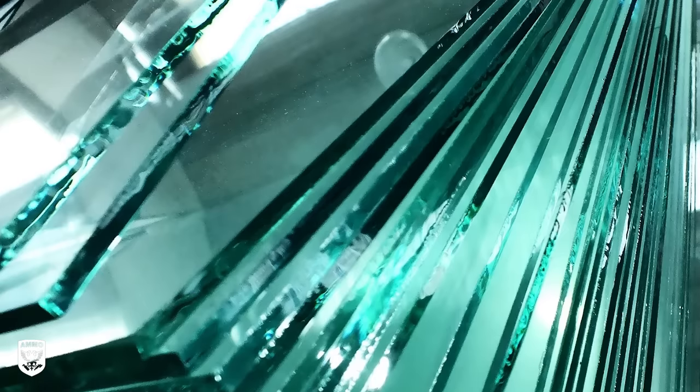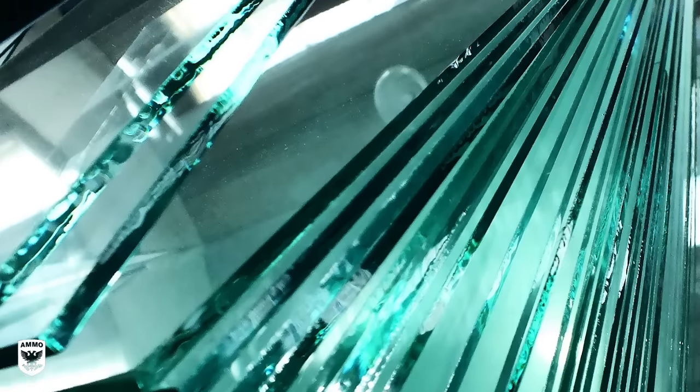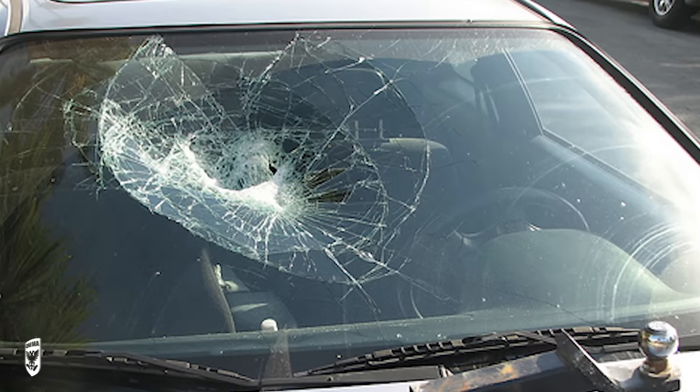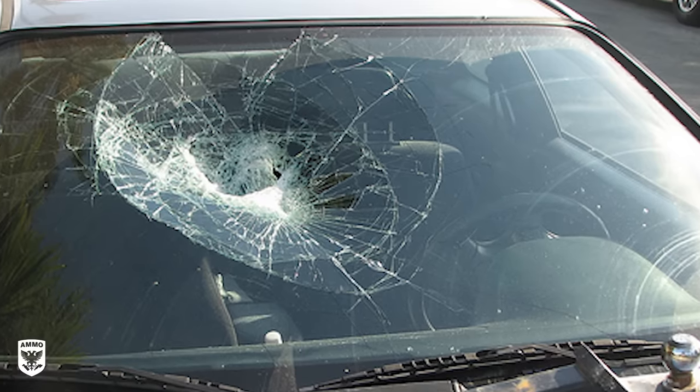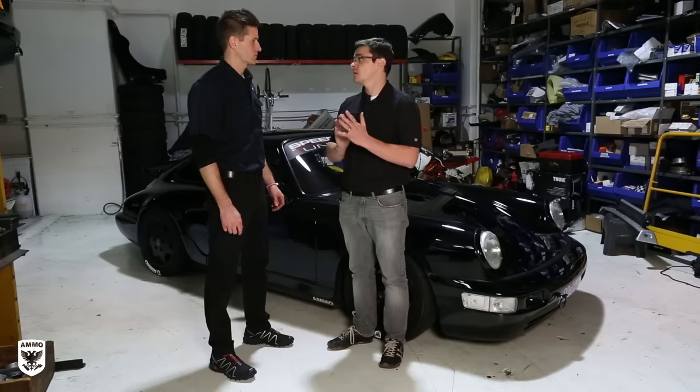Right now, what we have in our glass on the vehicle is actually laminate glass. There's two sheets of glass that are held together by a piece of plastic called PVB or polyvinylbutyral. And that holds the sheets together, and it's what we know right now as safety glass.